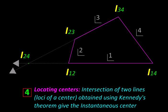Finally, here is an example of using Kennedy's theorem. So we have a four-bar linkage with 1, 2, 3, 4 as the links connected with revolute pairs. The revolute pairs themselves become the instantaneous centers I_12, I_23, I_34, and I_14. And connecting the centers I_23 and I_34 gives us one locus of I_24, and joining these two centers I_12 and I_14 gives us another locus of I_24. So wherever they intersect, we locate the center I_24.